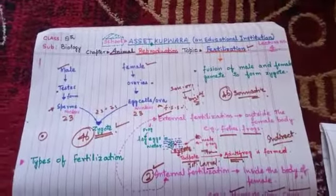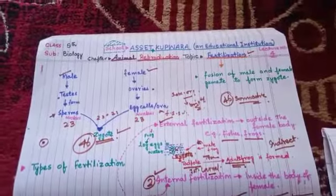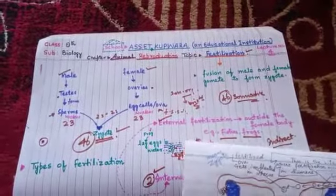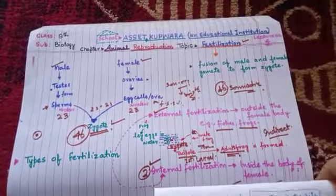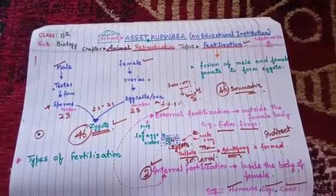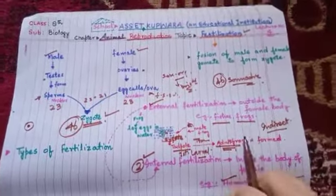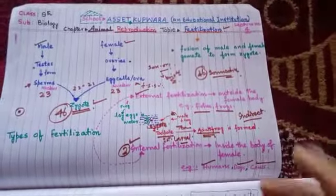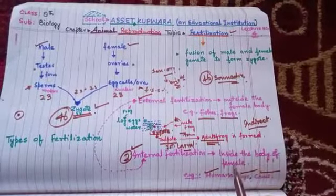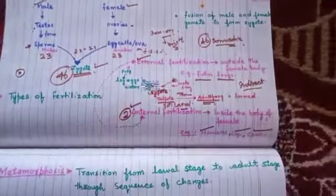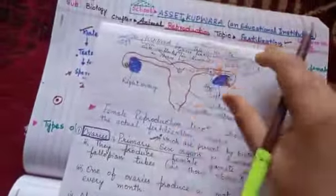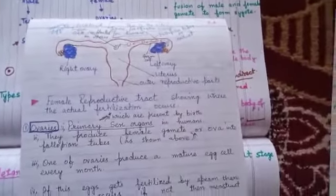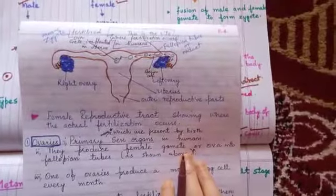Dear students, continuing with animal reproduction, we are now left with the topic of male and female reproductive systems. I hope you have understood the basic concepts in this chapter. The main topics we have covered include fertilization, types of reproduction, types of fertilization, and metamorphosis. Today I will give you a glimpse of the male and female reproductive systems.